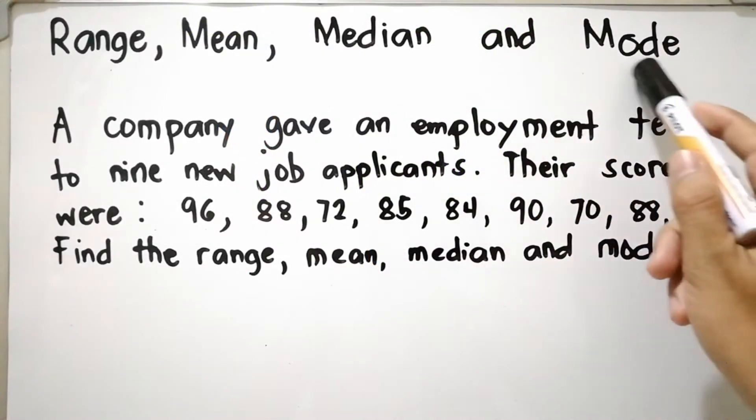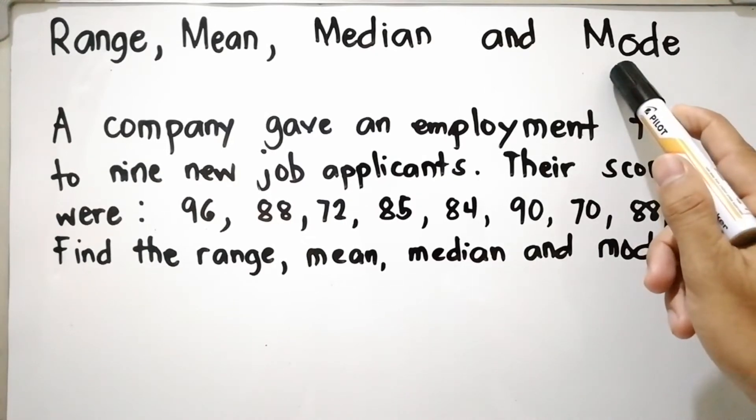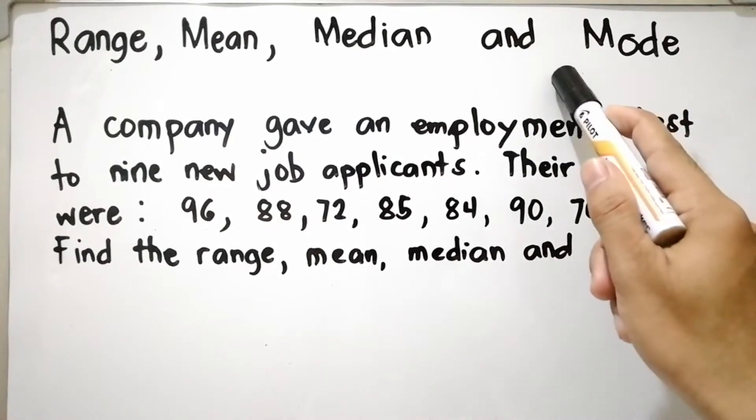And mode is denoted as MO or X-hat. This is the most frequent value or the measure that occurs the most number of times.